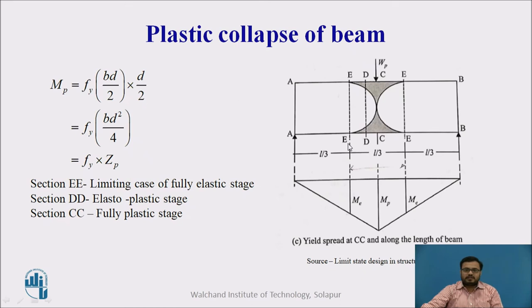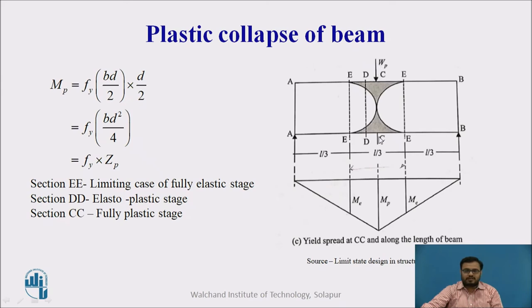Section EE is the limiting case of fully elastic range, with ME as the elastic moment. Section DD is the elasto-plastic stage — some part is plastic and some part is elastic; the central part remains elastic while extreme fibers are in plastic stage. Section CC, directly below the load, represents the fully plastic stage for the simply supported beam subjected to a point load.